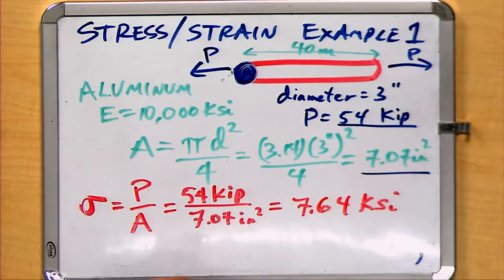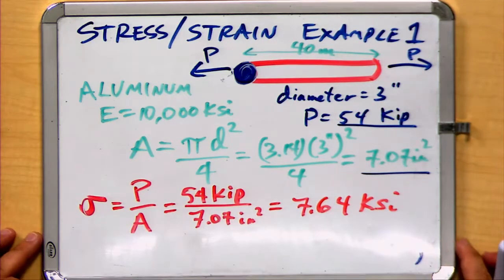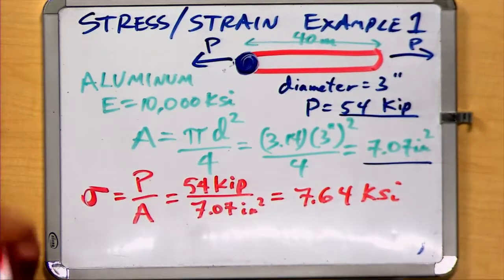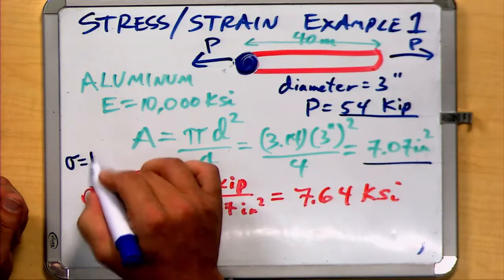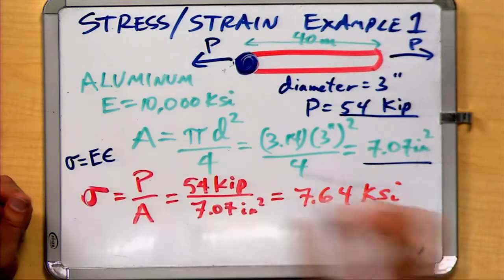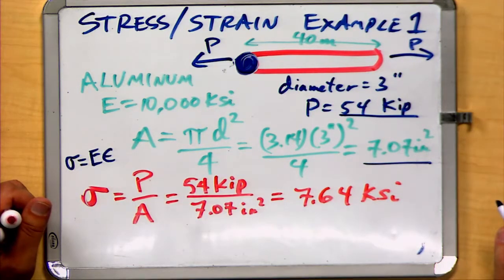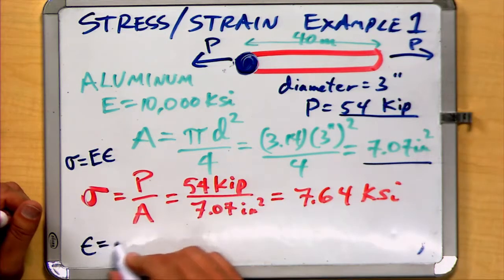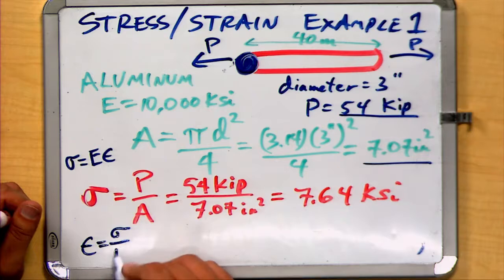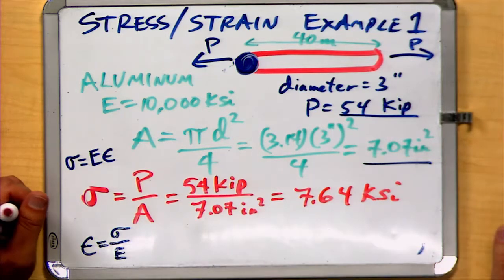Now that we've established that, we recognize that sigma equals E epsilon. We're going to have to manipulate that a little bit. If we do so, we know that our strain is equal to our stress divided by our modulus of elasticity.